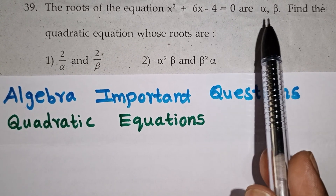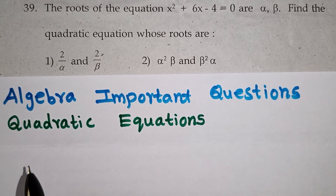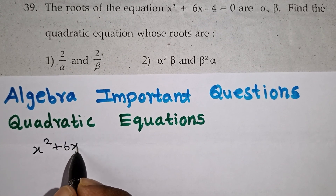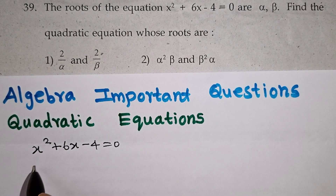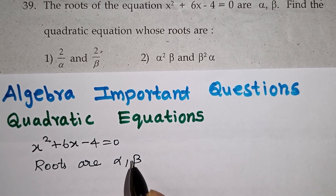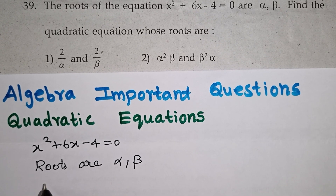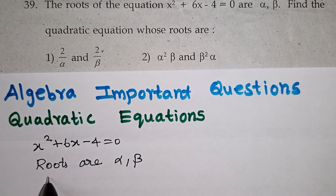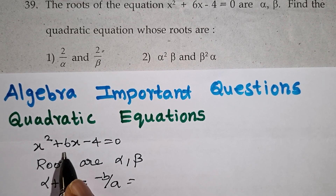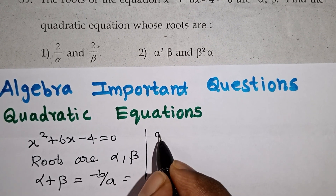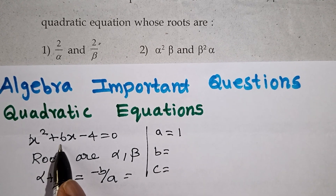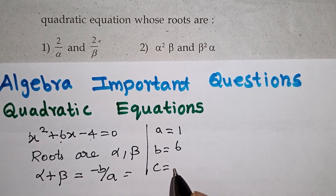If you get an equation whose roots are alpha and beta, we know the formula. Sum of the roots is alpha plus beta equals minus b by a, and product of the roots is alpha times beta equals c by a. In the equation x² + 6x - 4 = 0, the a value is 1, the b value is 6, and the c value is minus 4.